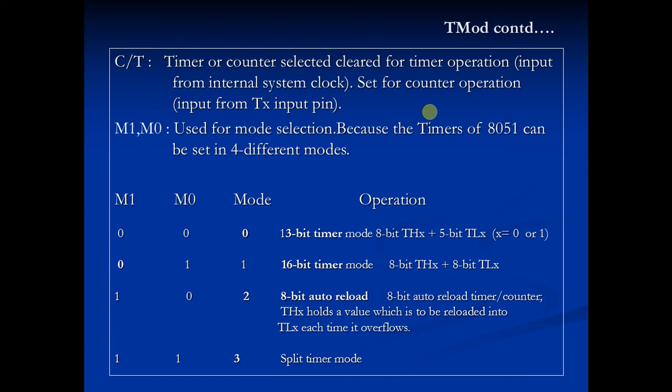Now let's move on to M1 and M0. The M stands for mode and it is used for mode selection, because the timer of the 8051 can be set in 4 different modes. We can select these different modes using M1 and M0.